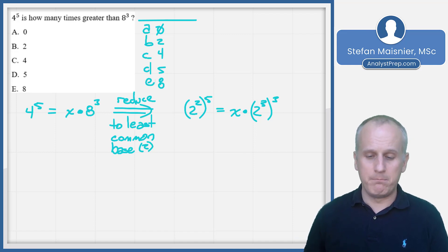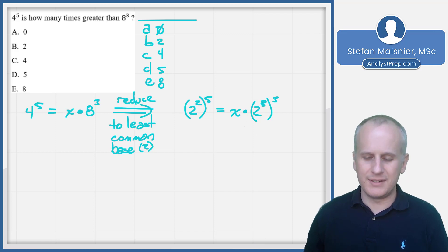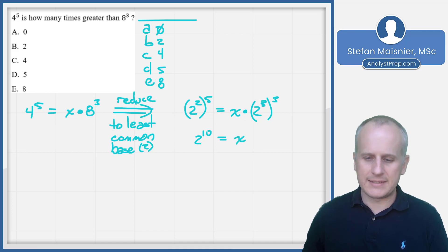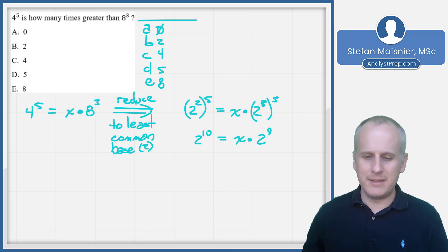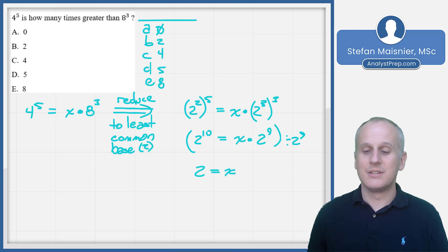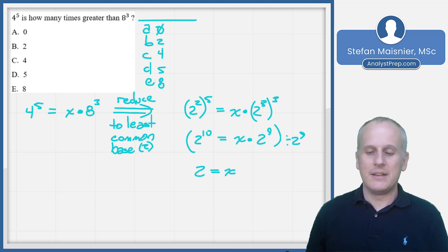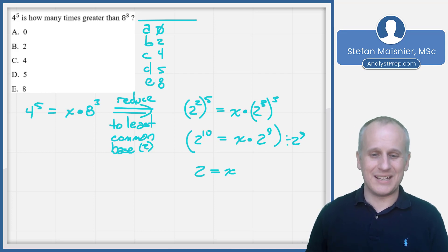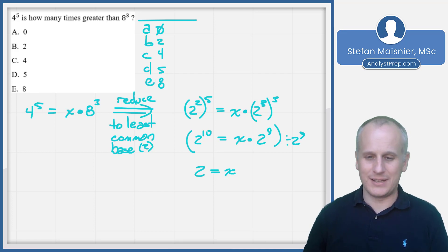Raising a base to a new power means multiplying the exponents. Two squared to the fifth becomes two to the tenth, and two to the third raised to the third becomes two to the ninth. So two to the tenth equals x times two to the ninth. Dividing both sides by two to the ninth, we get x equals two. Four to the fifth is two times greater than eight to the third, and the answer is choice B. Be careful not to restate this in exponential form — x simply represents the number of times greater.